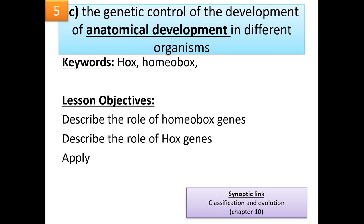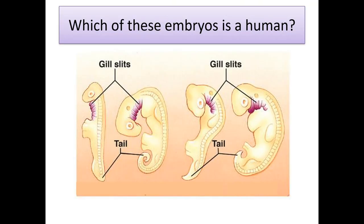The genetic control of anatomical development in different organisms — the genetic control of your anatomical development in you and in different organisms. My key words are Hox and homeobox. We are going to describe the role of these homeobox genes, these genes involved in anatomical development, and also the role of Hox genes, which are a type of homeobox gene but only found in animals. So here goes. Apologies to those of you that were here this morning — I may as well start from scratch.